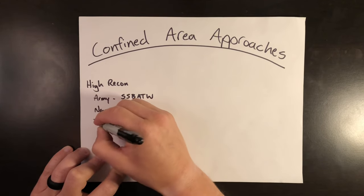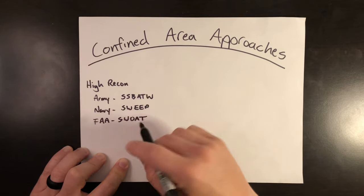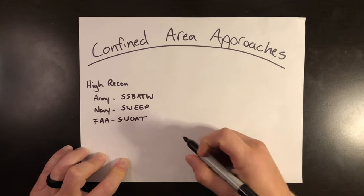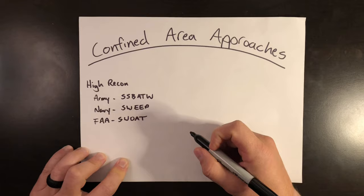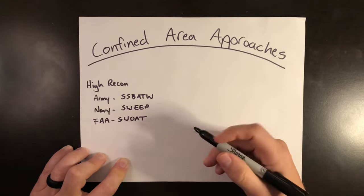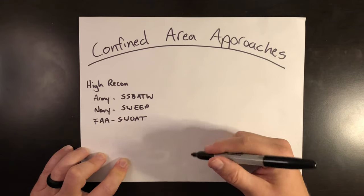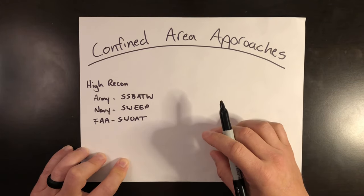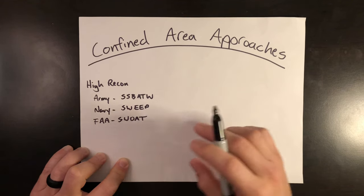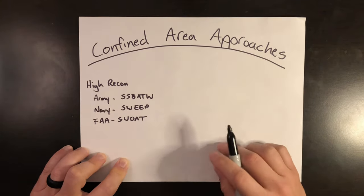Another great acronym right out of the FAA's manuals is SWOT — slightly reshuffled, but that's going to be suitability, winds, O for obstacles, approach and departure axis, and touchdown point. You'll see a lot of these acronyms cover the same principles: the suitability or size of the LZ, winds, approach, departure, and takeoff point. Ultimately, you need some sort of method for analyzing the LZ prior to initiating a confined area approach, because it's just less forgiving than other types of approaches that have plenty of room and potentially plenty of power margin.